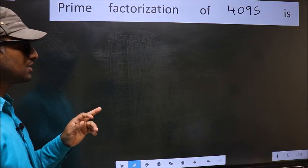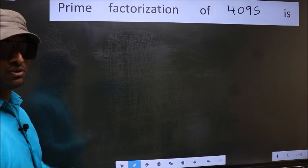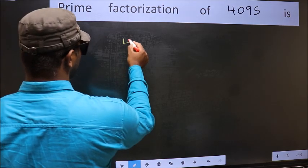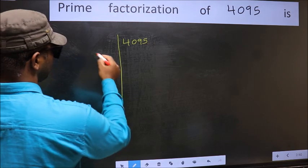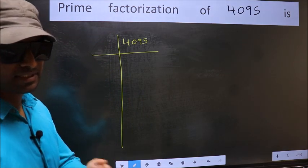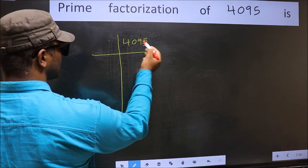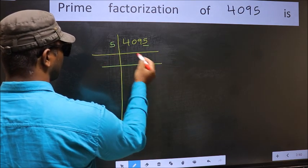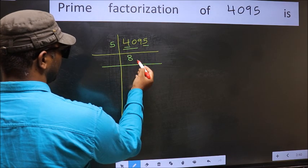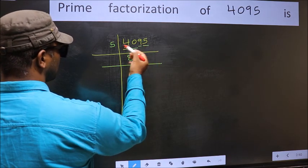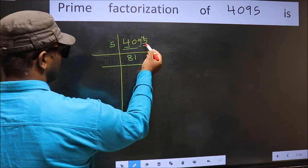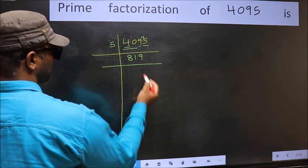Prime factorization of 4095. To do prime factorization, first we frame it as 4095. The last digit is 5, so take 5. First number 4 is smaller than 5, so take two numbers: 40. When do we get 40 in the 5 table? 5 eights are 40. The other number is 9; a number close to 9 in the 5 table is 5 once 5, so 9 minus 5 is 4. Carry forward 4: 45. When do we get 45 in the 5 table? 5 nines are 45.